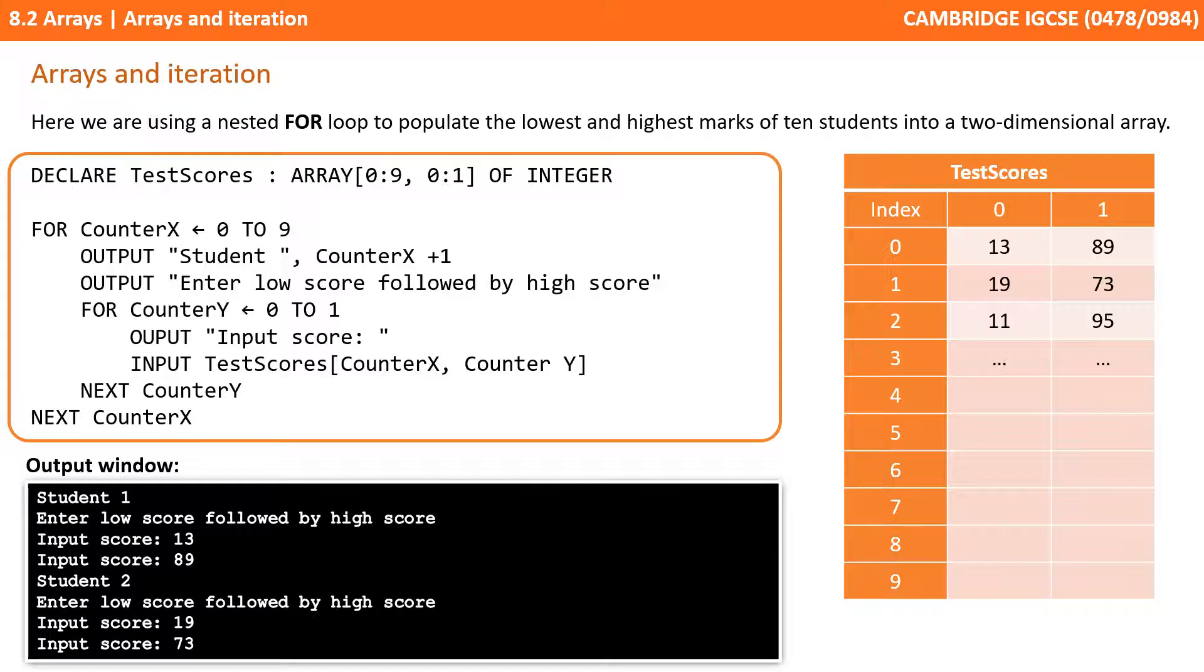When we get to the input line in the inner nested for loop, we're saying test scores counter x counter y. So that's the value of the outer loop followed by the value of the inner loop. We've got some example output at the bottom of the screen.